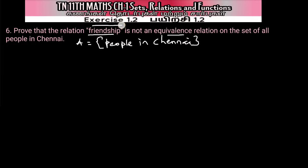Friends, this is class 11 math, exercise 1.2, question number 6. Prove that the relation friendship is not an equivalence relation on the set of all people in Chennai. The set is all people in Chennai.